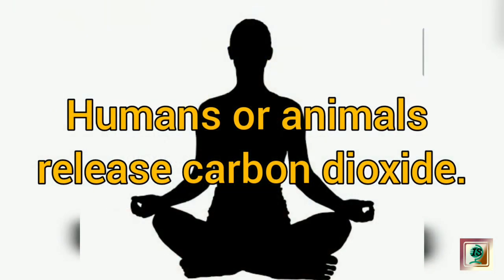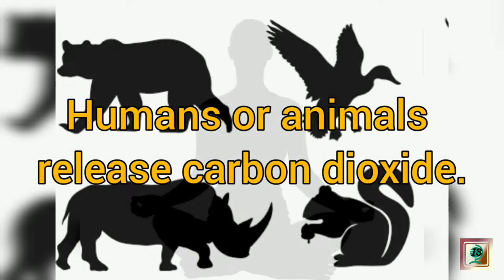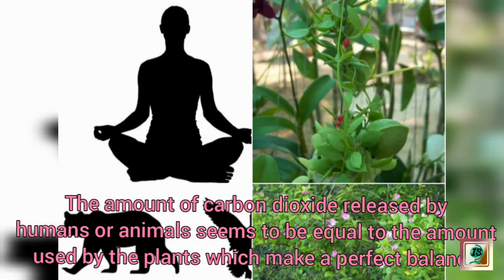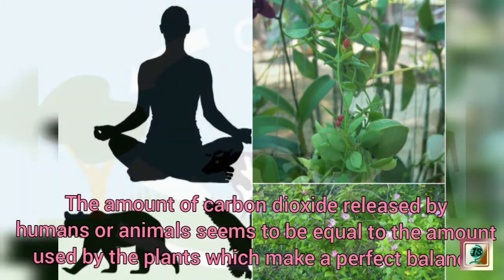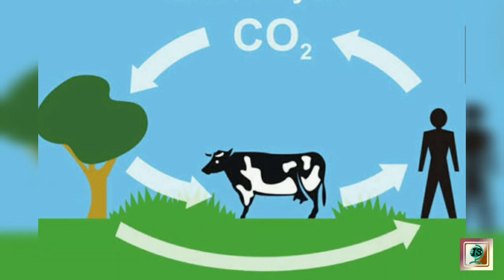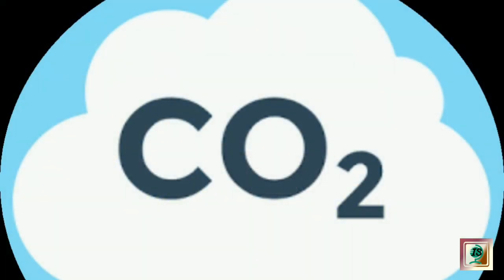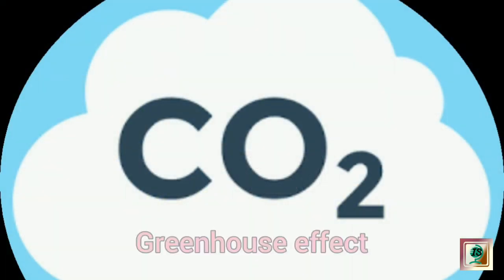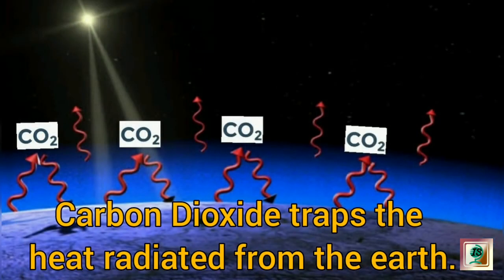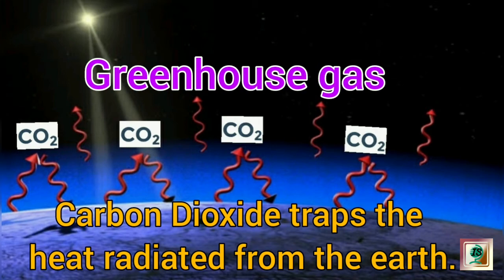Carbon dioxide is another important gas. Green plants use carbon dioxide to make their food and release oxygen, whereas humans and animals release carbon dioxide. The amount of carbon dioxide released by humans and animals seems to be equal to the amount used by the plants, which makes a perfect balance.